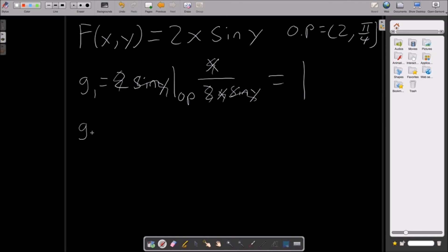Now we do the same thing with g2. The only difference is that we'll be deriving based on the y. Okay. So the partial of f of x, y with respect to y is 2x cosine y. Is that right? It looks right. At the operating point. Multiplied by y over my function 2x.